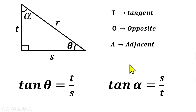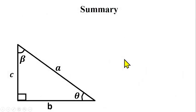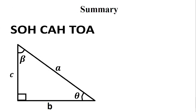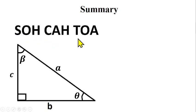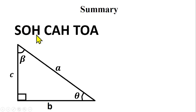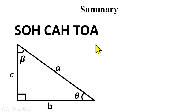We have discussed all three basic trigonometric ratios: sine, cosine, and tangent — derived from SOHCAHTOA. Sine is gotten from SOH: opposite over hypotenuse. Cosine is gotten from CAH: adjacent over hypotenuse. Tangent is gotten from TOA: opposite over adjacent. You must remember SOHCAHTOA so you know which ratio to use for a given question.